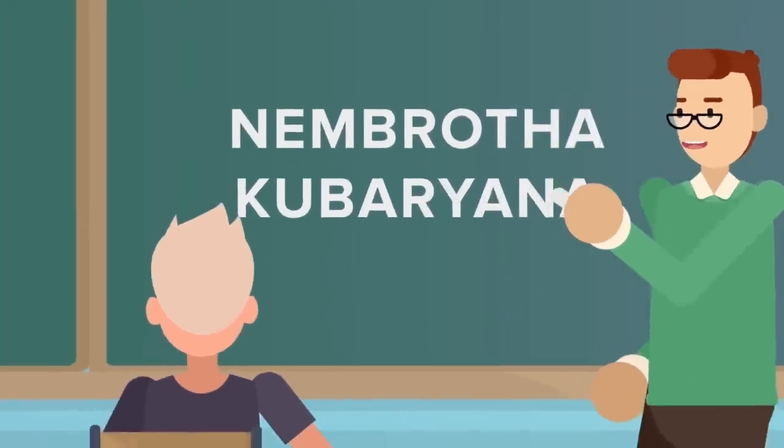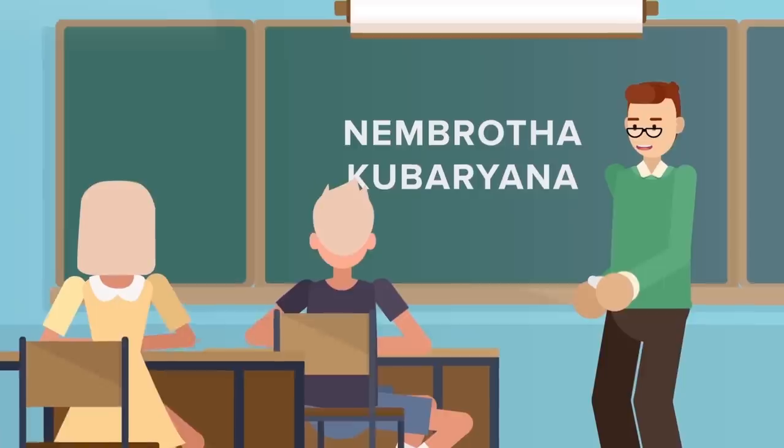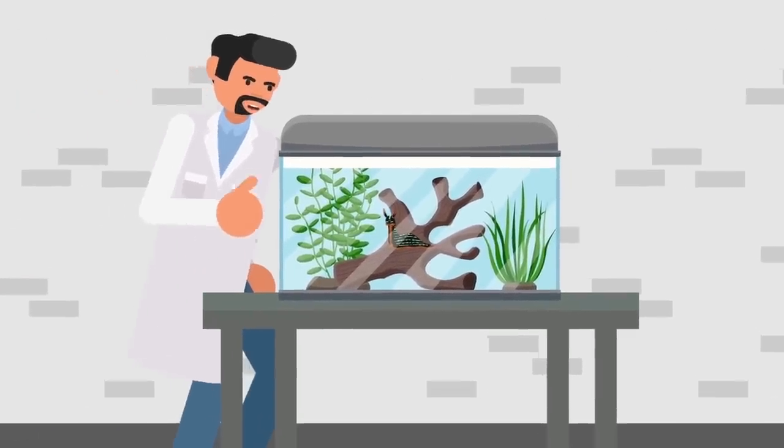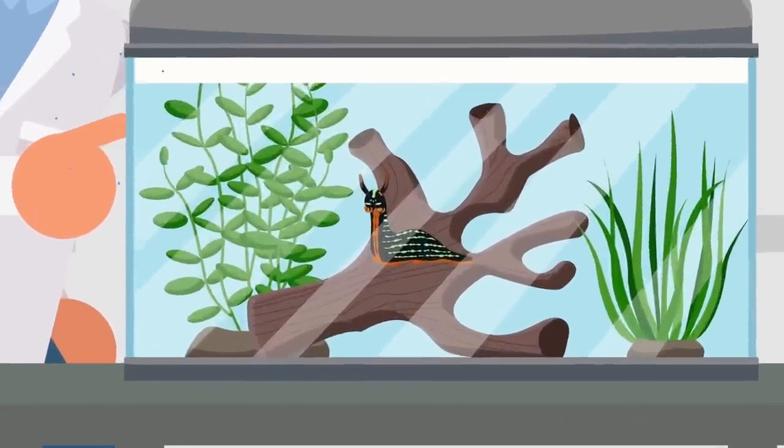While he would never admit to it, Lord Blackwood belongs to the species Nembrotha Kubaryana, also known as the Variable Neon Slug. He's kept in a standard aquarium in a Foundation containment site, and is physically no different to any other member of his species.